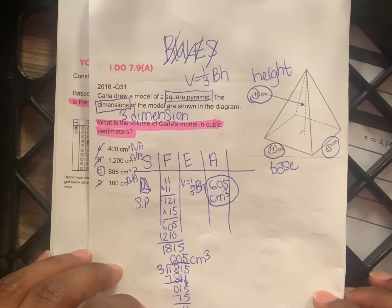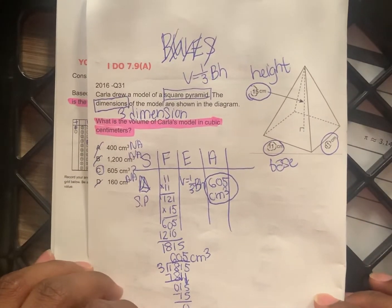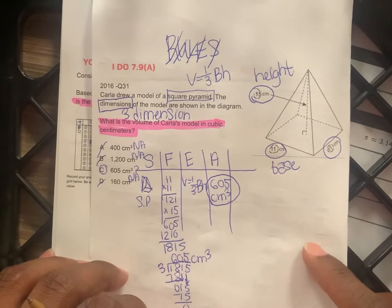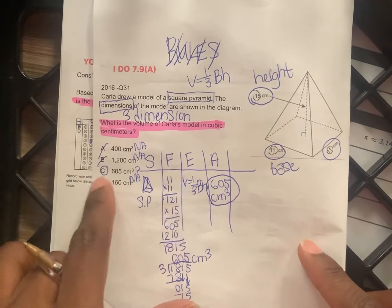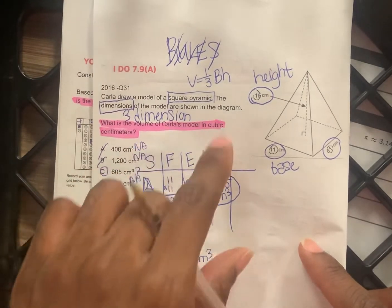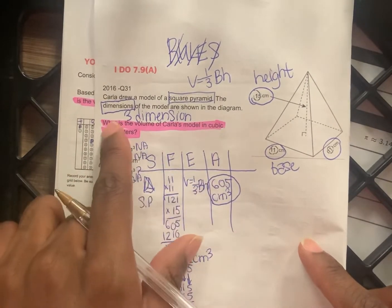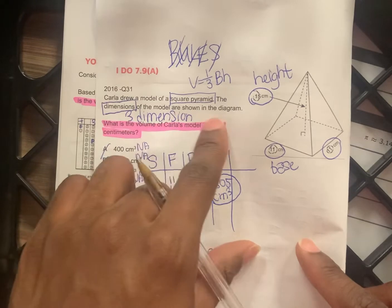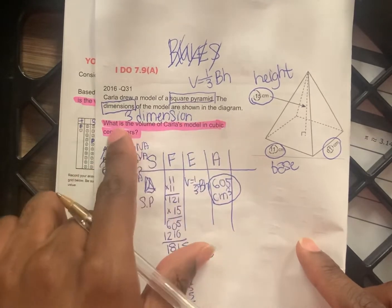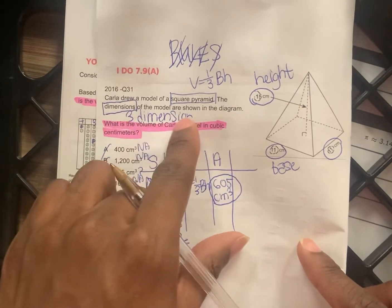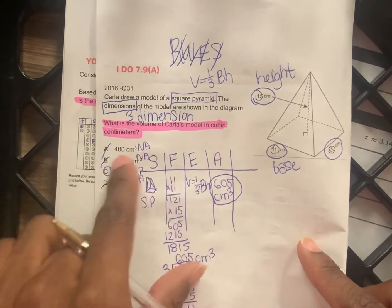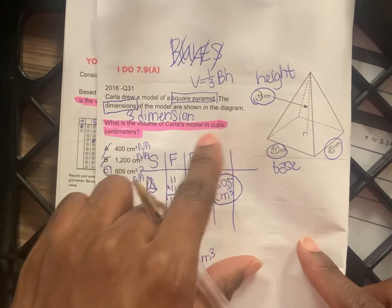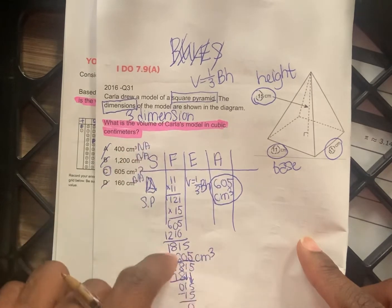All right, I do 7.9a. I'm going to read the word problem and underline the question specifically. After we read the word problem: Carla drew a model of a square pyramid. The dimensions of the model are shown in the diagram. What is the volume of Carla's model in cubic centimeters?